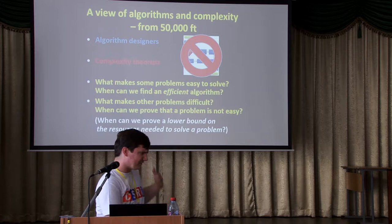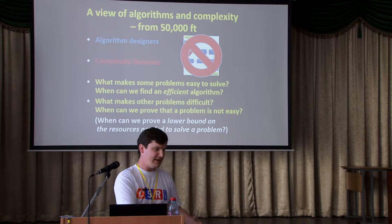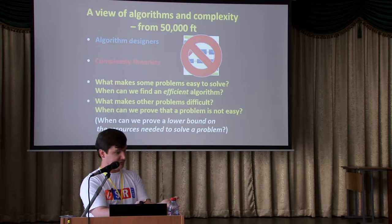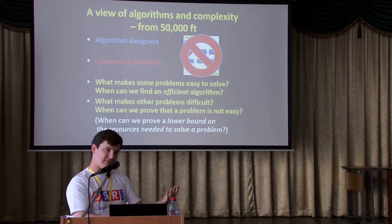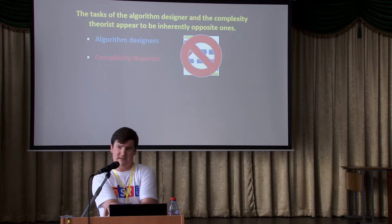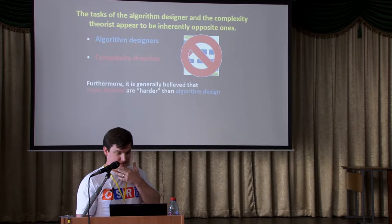More technically, complexity theorists ask: when can we prove a lower bound on the resources needed to solve a problem? When we have an algorithm running efficiently, we have an upper bound on the running time. A complexity theorist is looking to prove that any algorithm solving a particular problem will necessarily take some unreasonable amount of time. It seems obvious that algorithm design and complexity theory are completely opposite tasks — one tries to find an algorithm, and one tries to prove there is none.